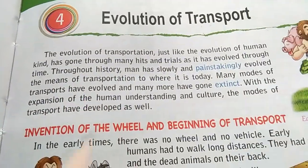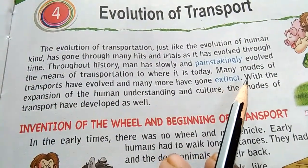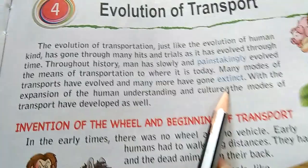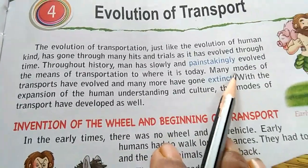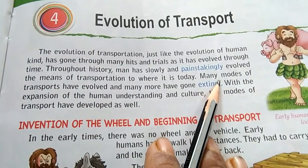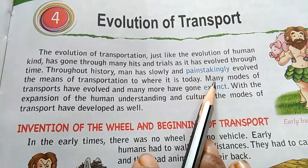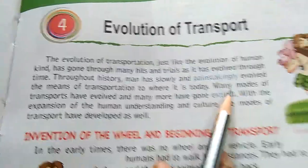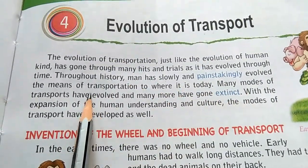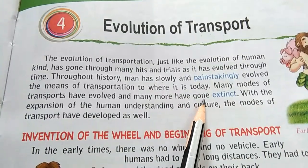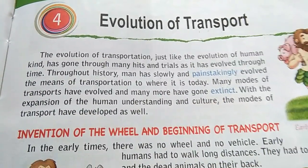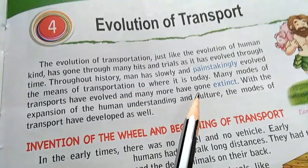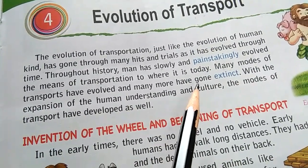Many modes of transport have evolved and many more have gone extinct. Nowadays, generally four modes of transport are there: roadways, railways, waterways, and airways. Extinct means those means of transport are no longer used. Earlier, for example, the bullock cart — any cart which was drawn by animals.